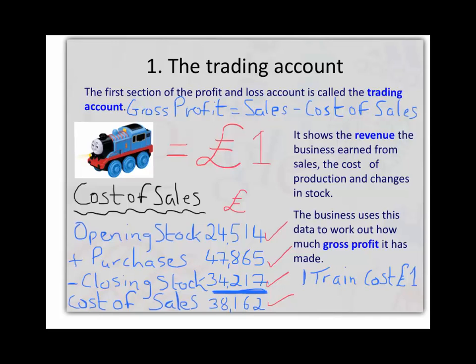This number is very important as the cost of sales essentially tells us how much it cost us to either make the toy trains in our factory or how much it cost us to buy them from our supplier. We can't work out our profit unless we know how much it cost us to buy the toy trains that we traded and sold on to our customers.